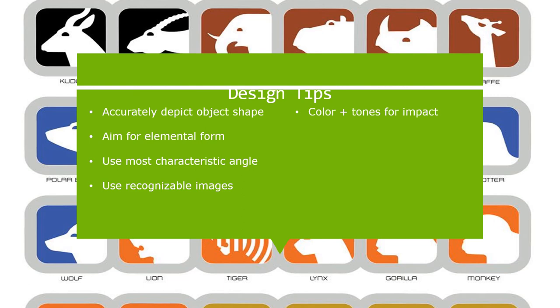Design tip five: color and tone for impact. Select color and tones for impact, legibility, meaning, storytelling, and context. For our project specifically, you're creating a black and white sign, so there's not much room for color. But there is a little, so think specifically about what that means for legibility, meaning, and context.